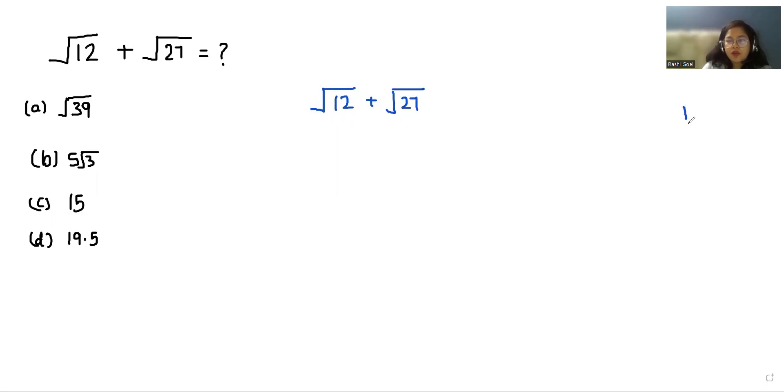we take the LCM of 12 and check. 2 times 6, 2 times 3, and 3 times 1. So we can write 12 as square root of 12 equals square root of 2 times 2 times 3. They have a pair, so we'll take it out and leave the 3 in square root. So we can write in place of 12, 2 square root 3.